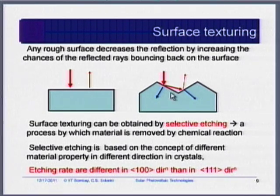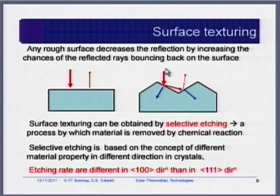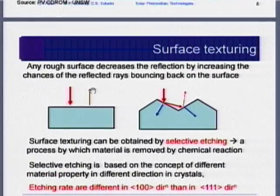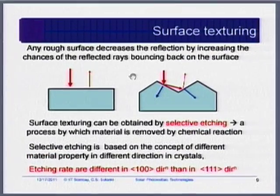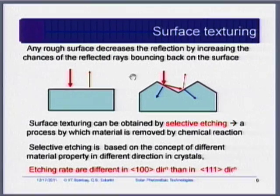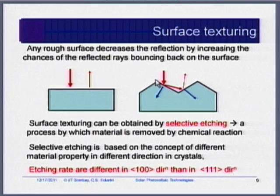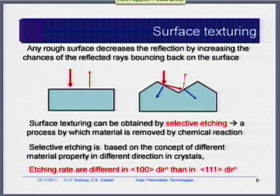With texturing, when a ray comes and the surface is rough or textured, a reflected ray may hit another facet and have a second chance of absorption. This reduces the probability of reflection. Texturing thus reduces the chances of reflection significantly.